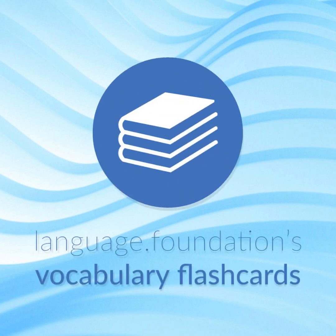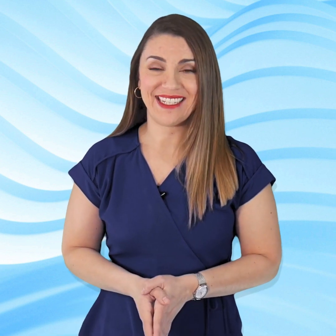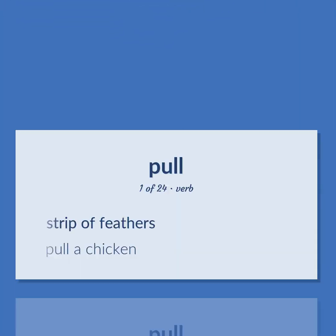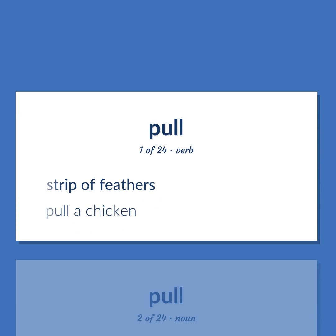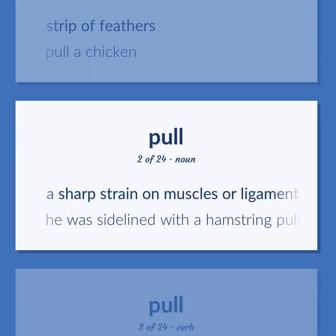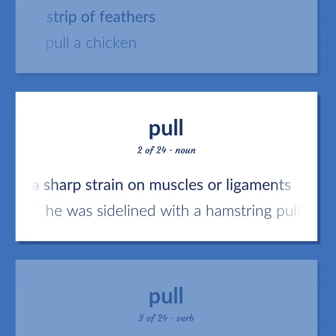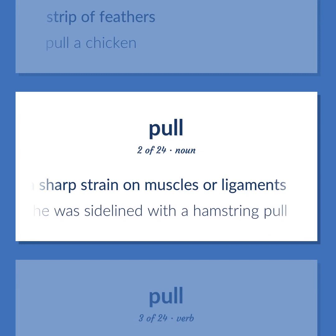Language Foundations Vocabulary Flashcards, helping you achieve understanding. Pull: to strip feathers from a chicken. Also, a sharp strain on muscles or ligaments — 'He was sidelined with a hamstring pull.'